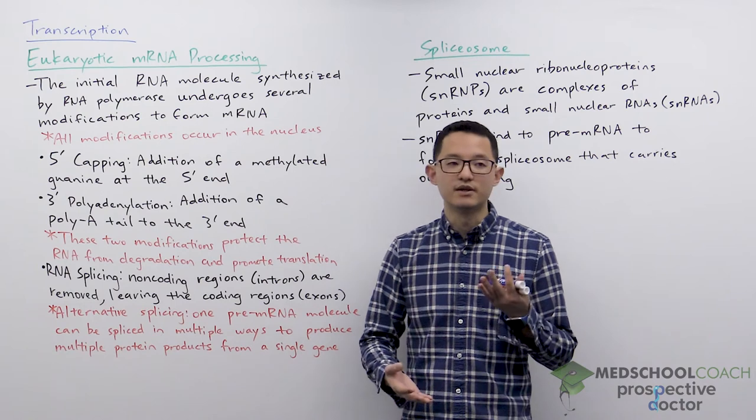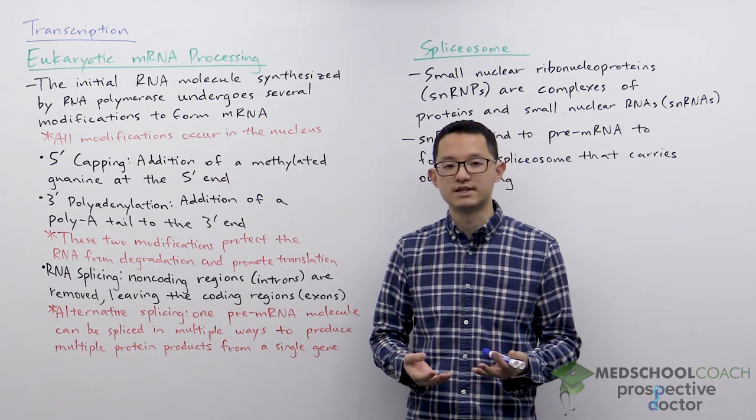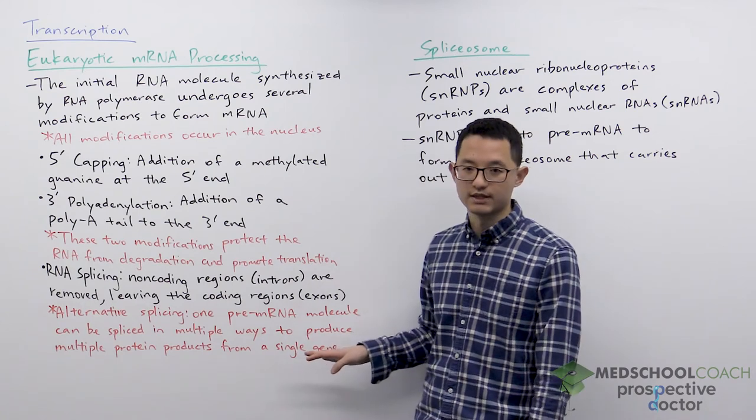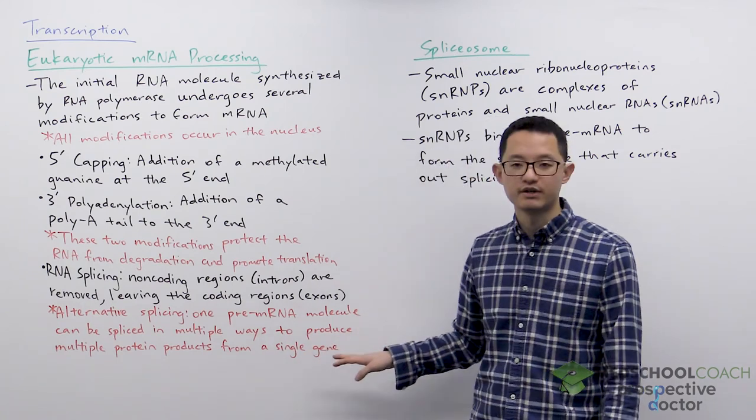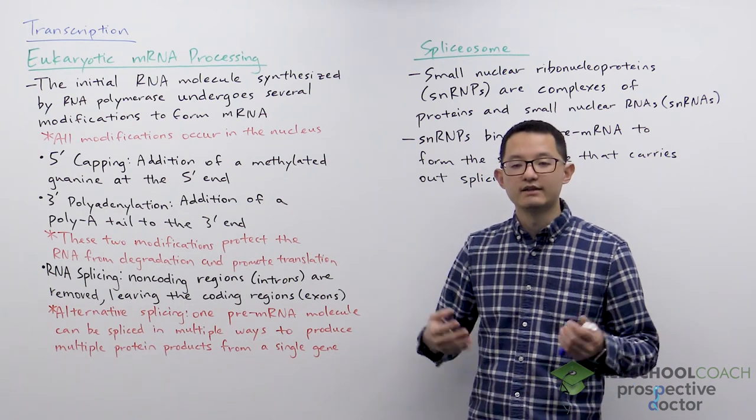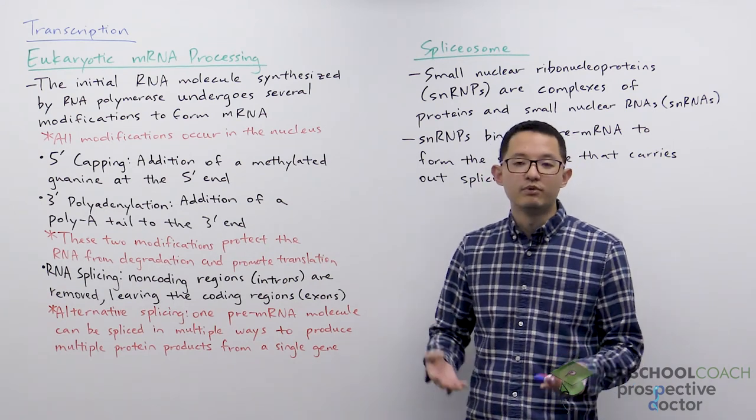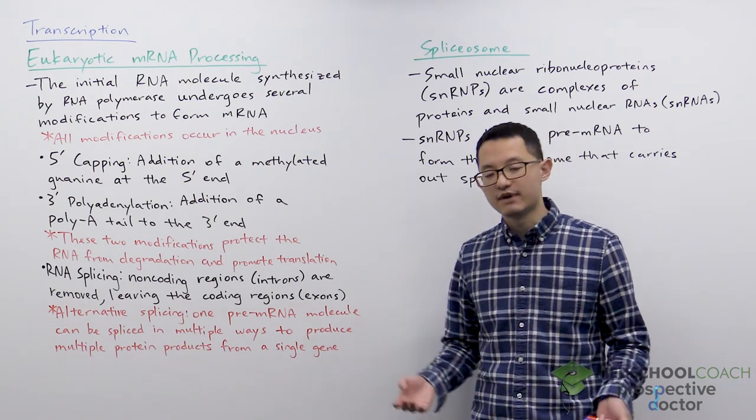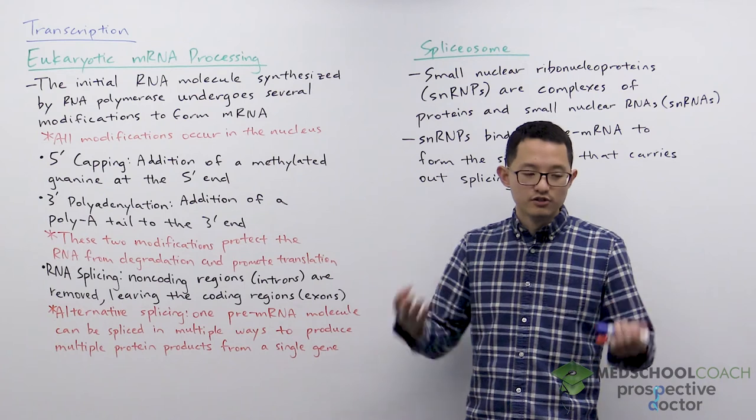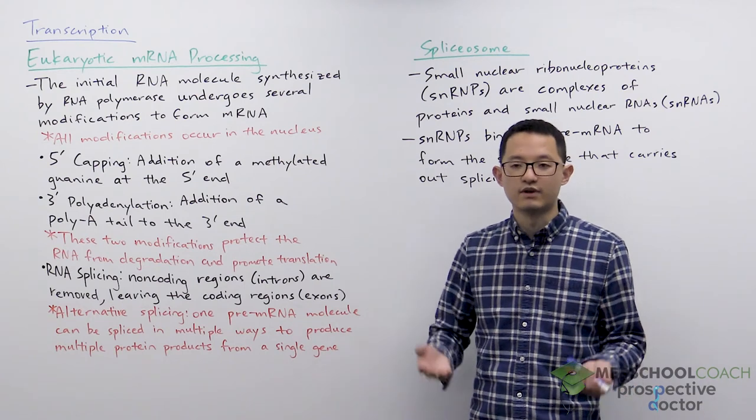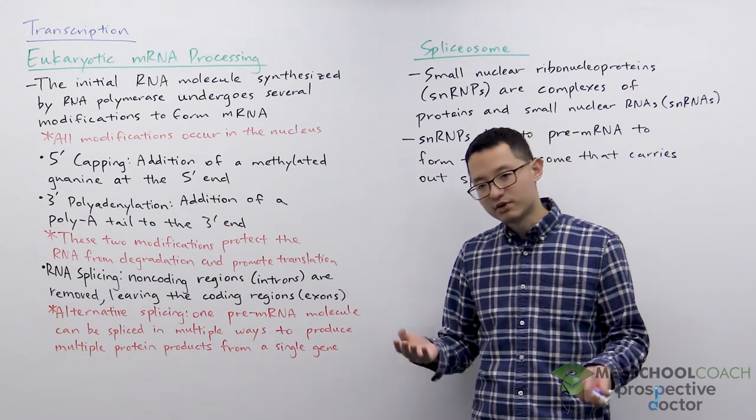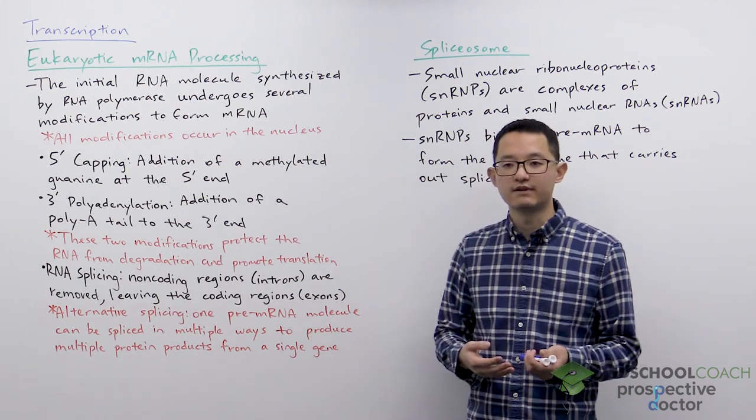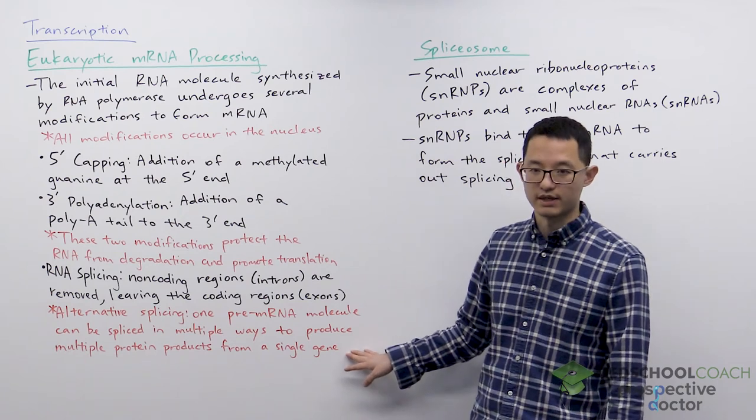You can have different versions, essentially different forms of a mature mRNA from alternative splicing, and the main evolutionary advantage of alternative splicing is that it allows for multiple protein products to be produced from a single gene. So instead of having to have a new gene sequence for every protein product that we want to make, if there's a protein product that we want that's very similar, just slightly different, then we can produce it through alternative splicing.